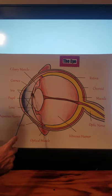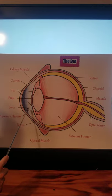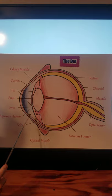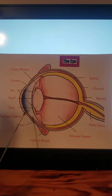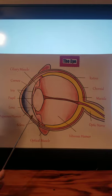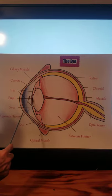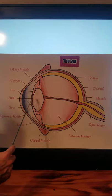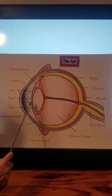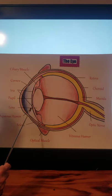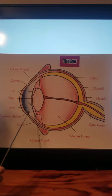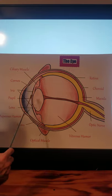We have the iris, which is right here — that is what gives the eye color, and it's tissue laying behind the cornea. We have the pupil, which is the black circular opening in the center of the iris that regulates the amount of light that enters the eye by constricting and dilating.